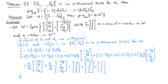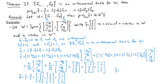Next, to calculate z, I do y minus y-hat, which is (2, 2, 3, 5) minus (1, 3, 2, 5), giving me the vector (1, -1, 1, 0). So y, written as a sum of a vector in w and a vector in w-perp, is (1, 3, 2, 5) plus (1, -1, 1, 0).